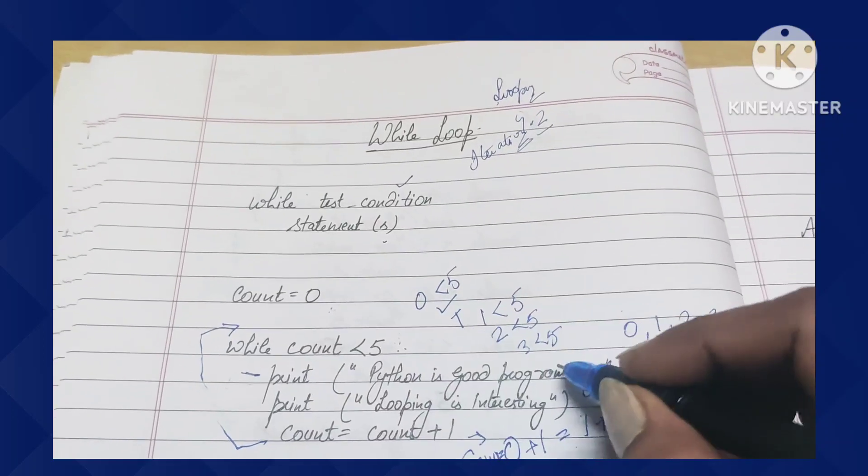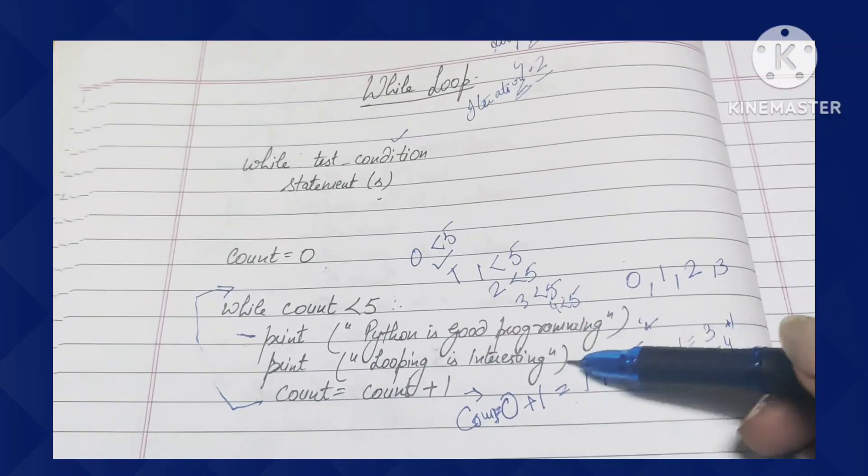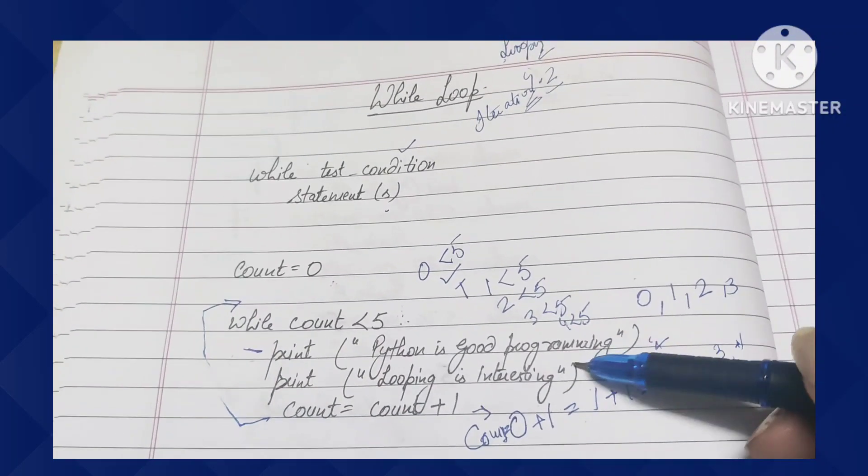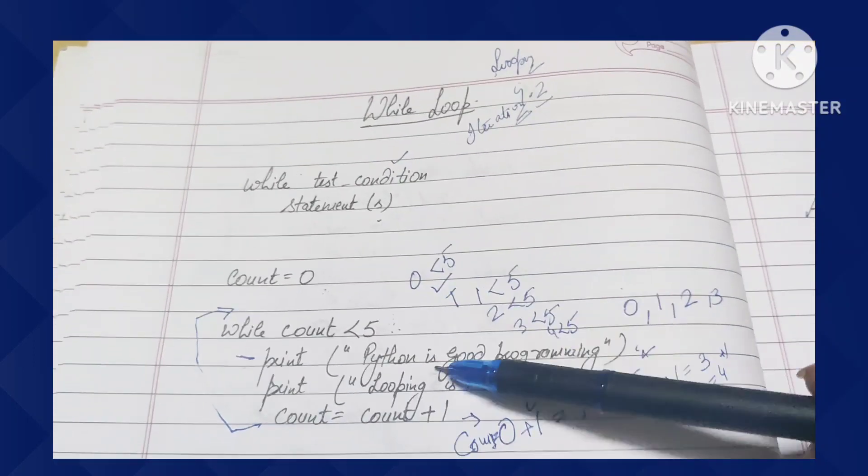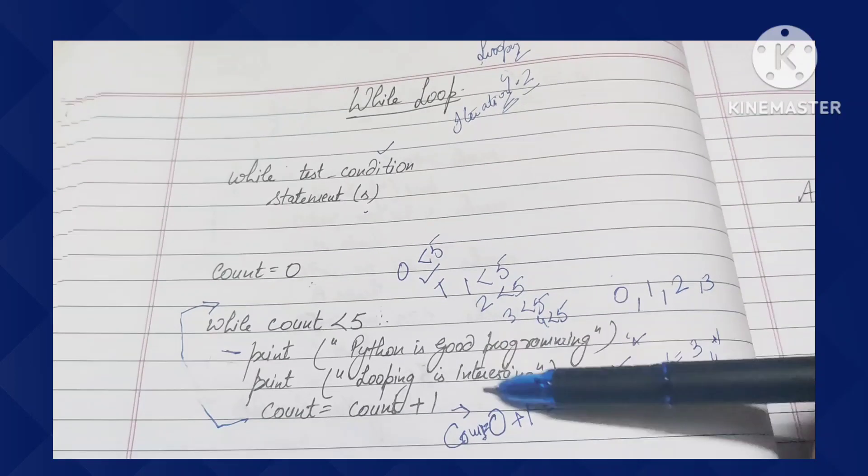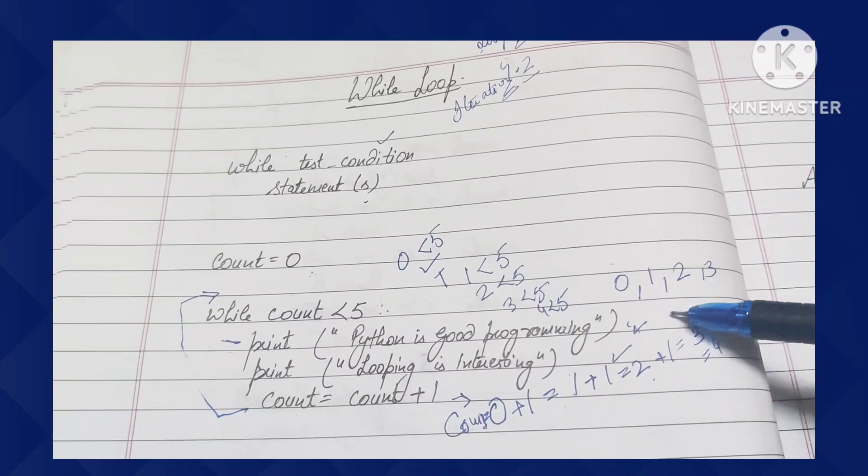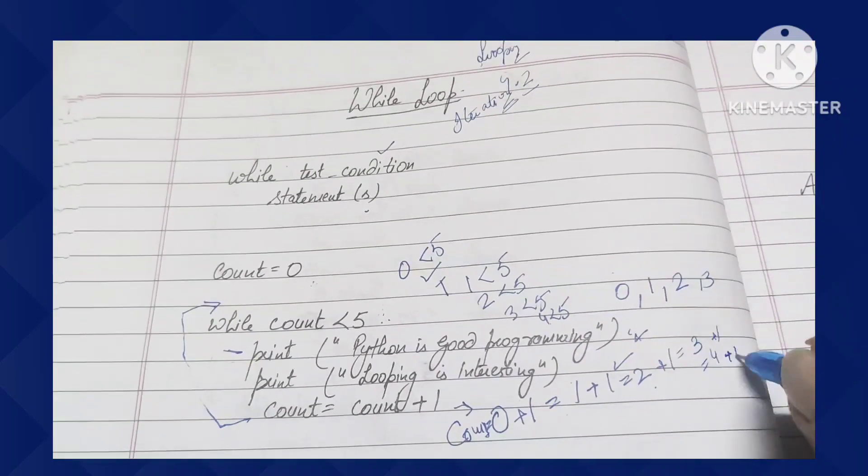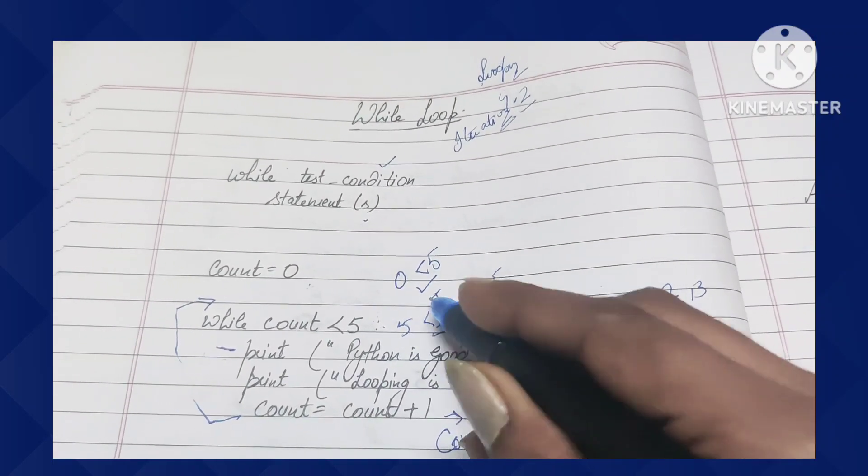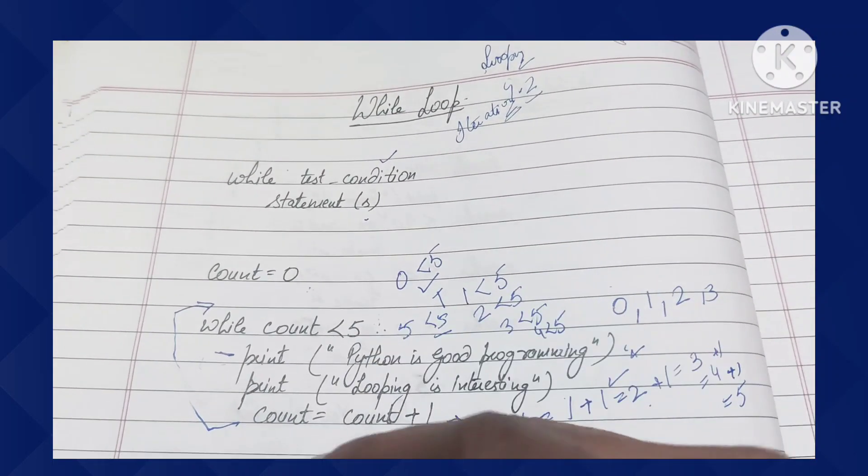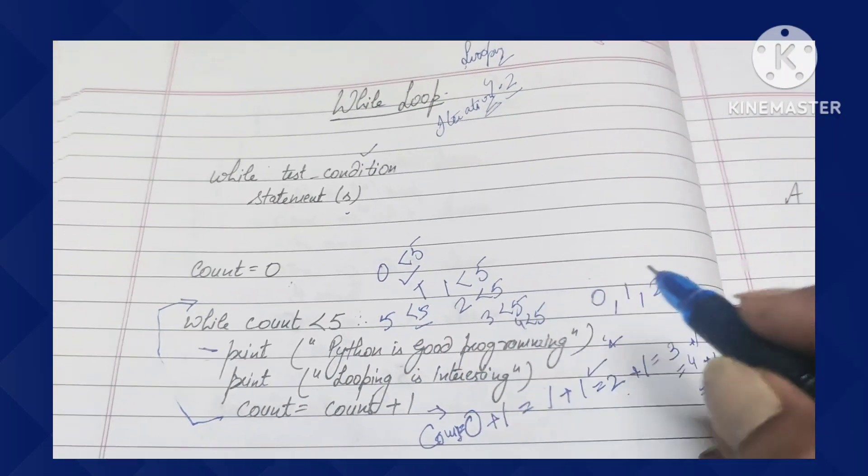This is iterative looping, conditional looping. It will print again. The count value increases to 4 plus 1, which becomes 5. Five less than five - condition is false. When condition is false, control will leave the loop and your output will appear: 'Python is good programming' and 'Looping is interesting' - how many times? One, two, three, four.